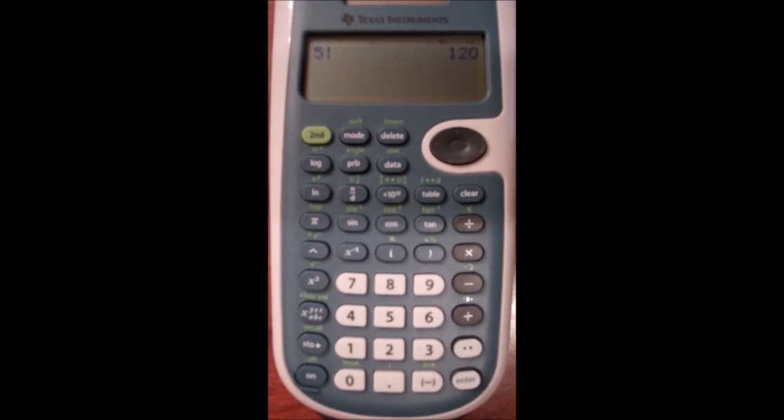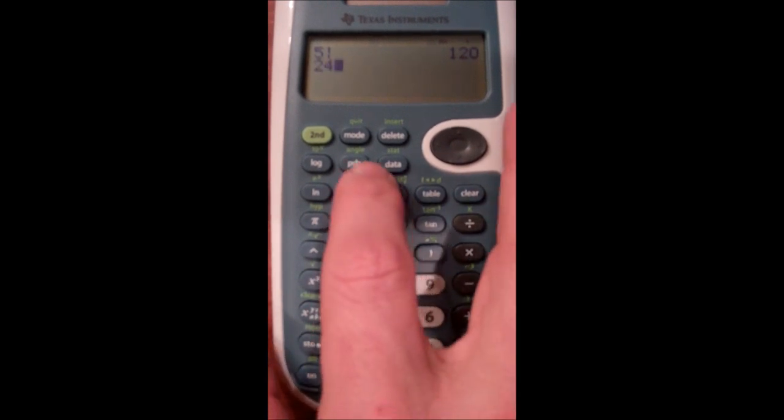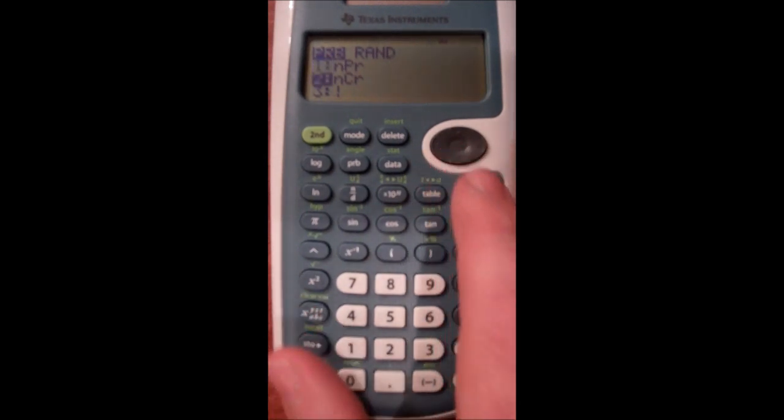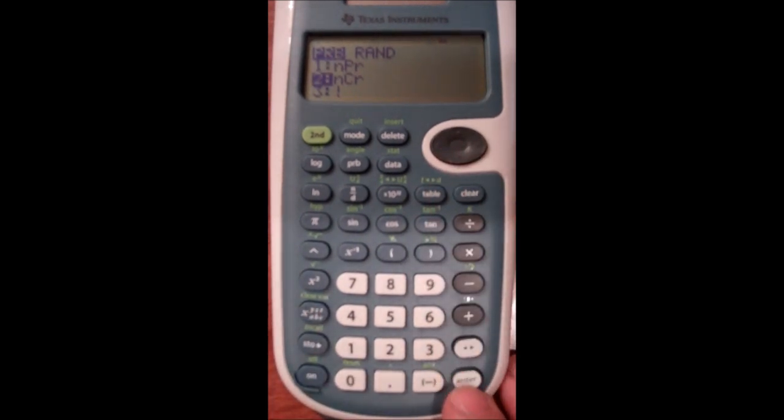Now, if I had 24 students and I was going to generate a focus group of five students, I wanted to find a combination of the number of ways I could take a class of 24 and arrange them in a group where order does not matter using the NCR button, hitting the PRB, coming up here, giving my NCR option.